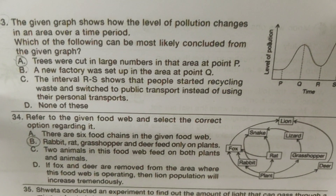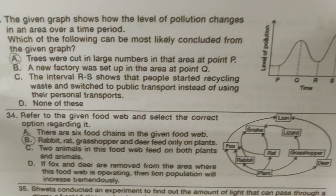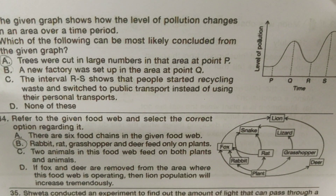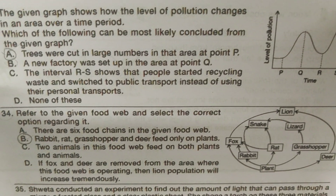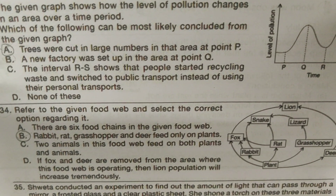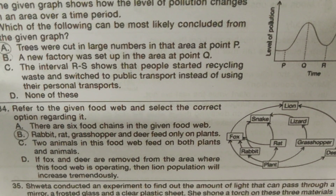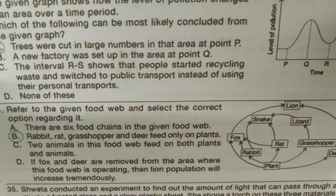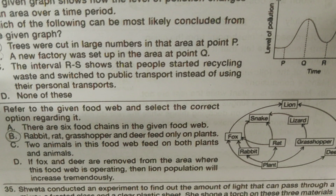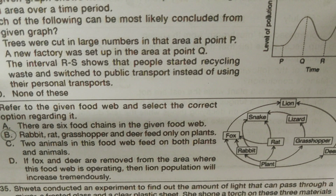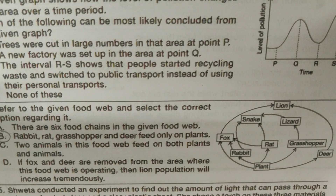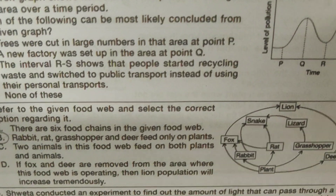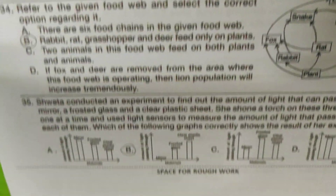Refer to the given food web and select the correct option regarding it. Rabbit, rat, grasshopper, and deer feed only on plants. That's correct!